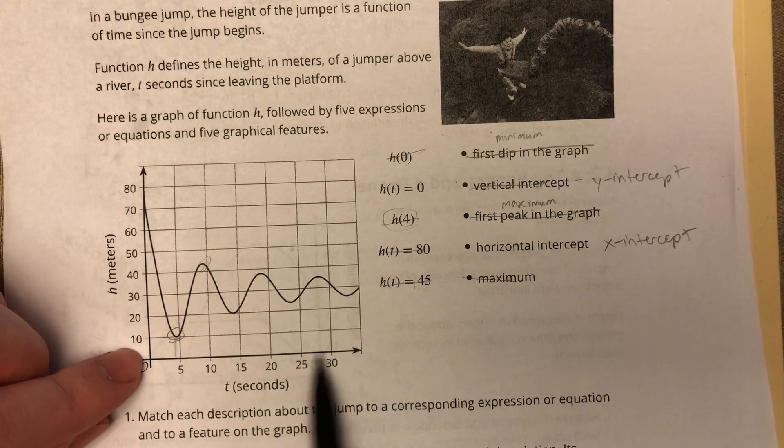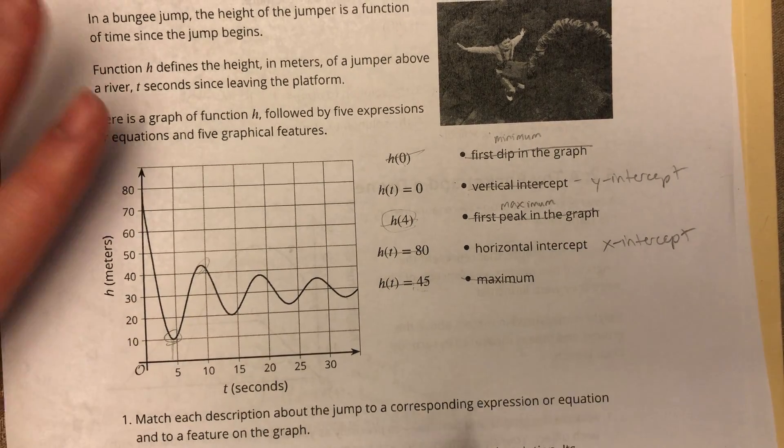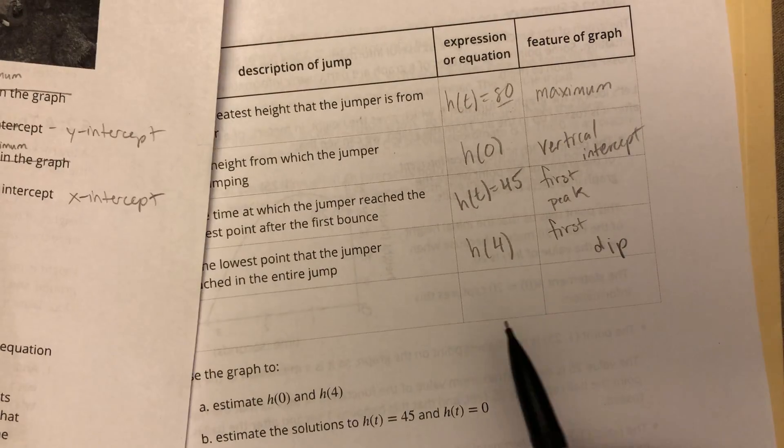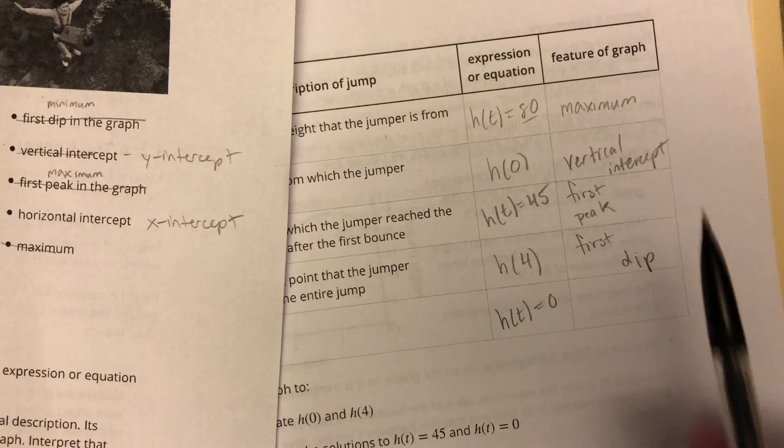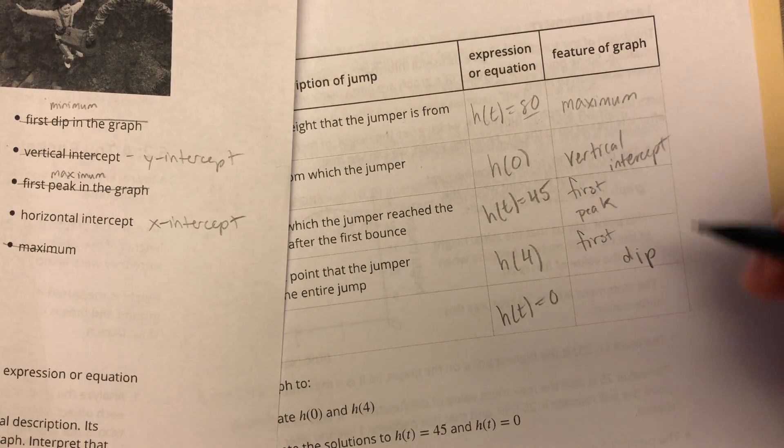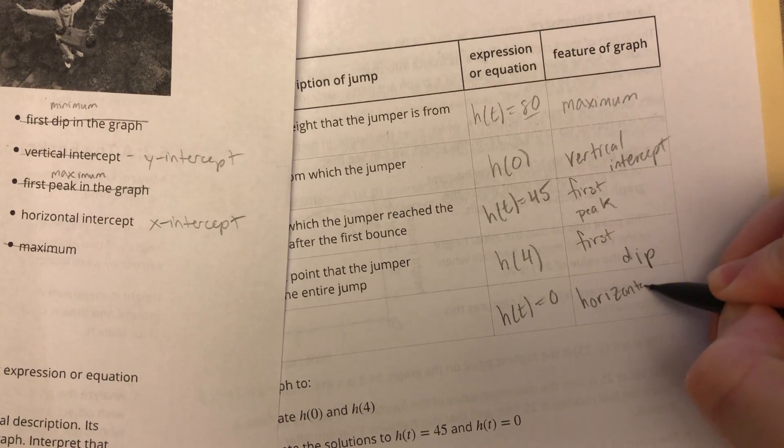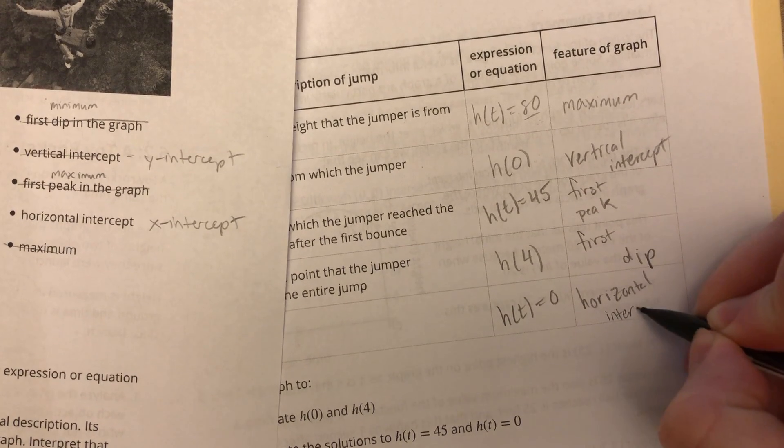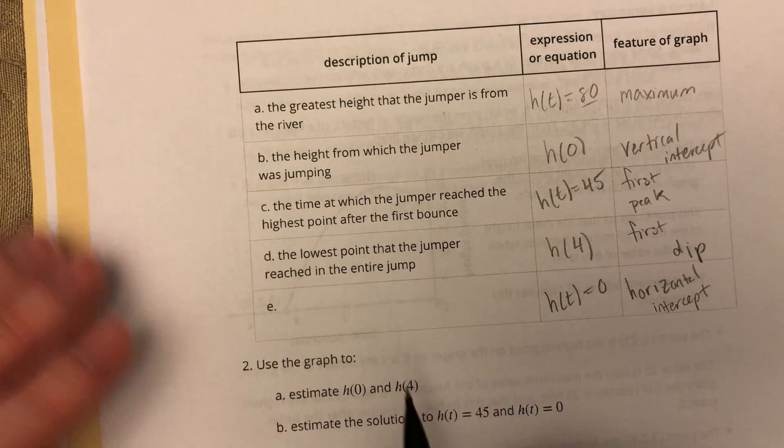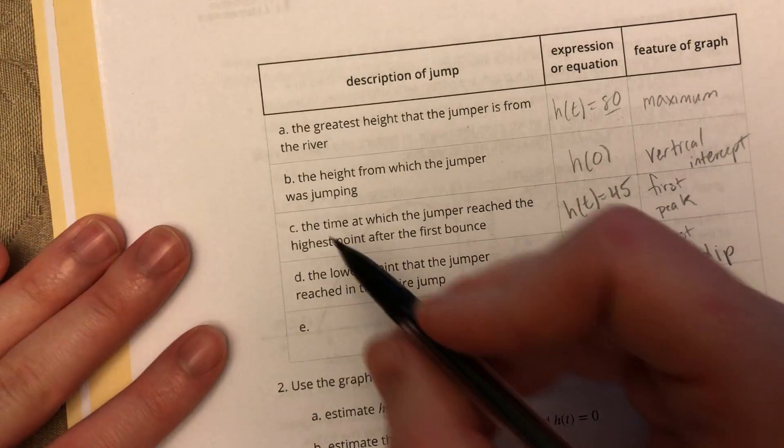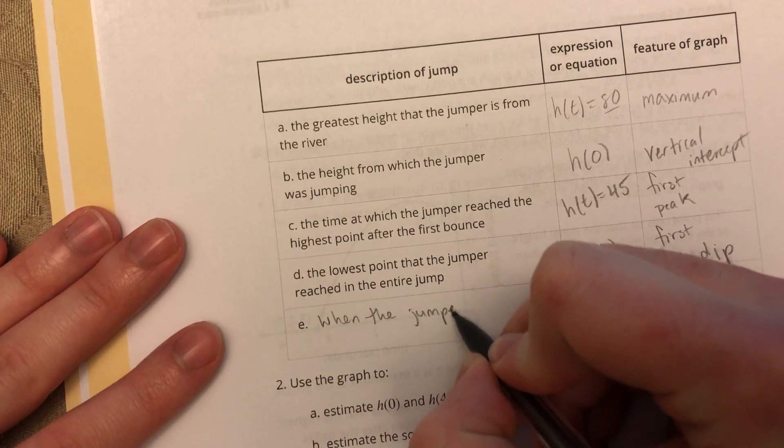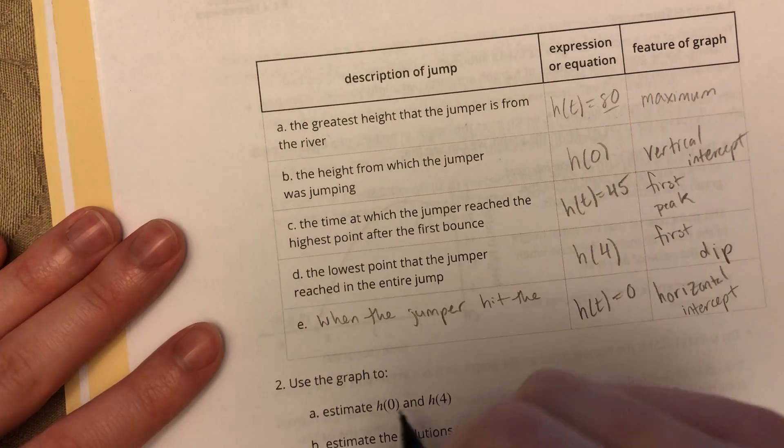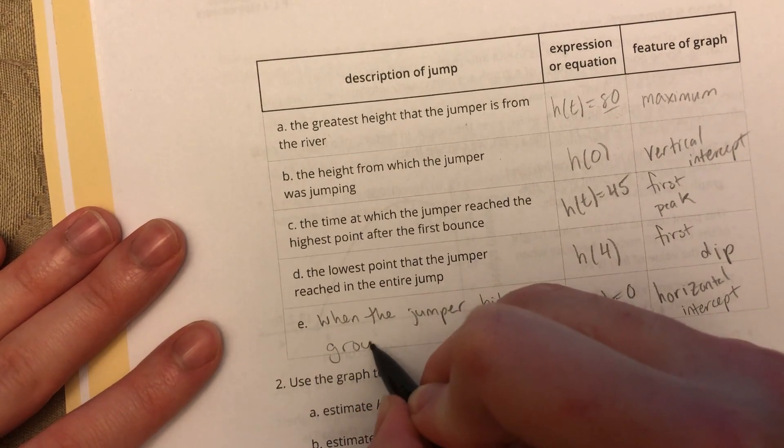So what do they want? They want me to record our interpretation for that last row. So the expression or equation for that last row would be H of T equals zero. When does Y equals zero? Well, this graph never hits that X axis, so that doesn't exist. The feature of the graph would be the horizontal intercept or X intercept. Alright. And the description of that, that would be when the jumper hit the ground. So that would be very unfortunate. So I'm glad that there is none of that because that would mean something very sad happened to our poor jumper, but maybe that's sort of a lesson. Don't bungee jump. Well, I guess, nevermind.